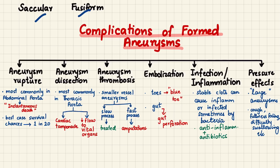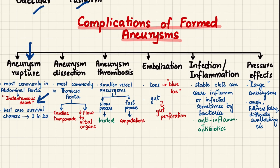Now we'll look at the complications of formed aneurysms. The first and most natural complication is aneurysm rupture, which most commonly occurs in the abdominal aorta. Since this is the chief large blood vessel, rupture leads to massive hemorrhage and instantaneous death. Even with surgery, the best-case survival rate is only 1 in 20 patients.